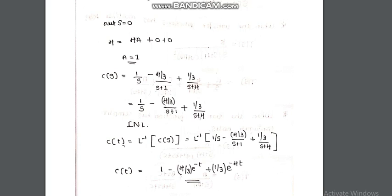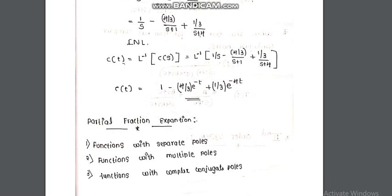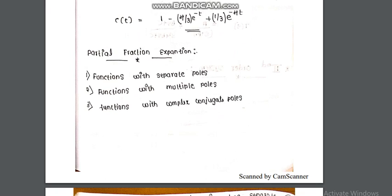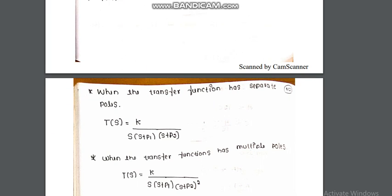To summarize: given G(s) and a unit feedback system with unit step input, we find C(s) using the closed loop formula, then apply partial fractions and inverse Laplace. There are different types of partial fractions: functions with separate poles, like T(s) = k / [s(s+p1)(s+p2)].